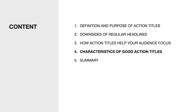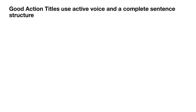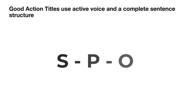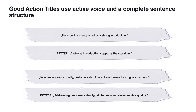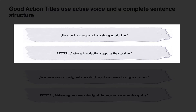For drafting good action titles there are two guidelines you need to follow. Good action titles use active voice and a complete sentence structure: subject, predicate, and object. The subject is the who or what of the sentence. The predicate is the verb, and the object is any noun or concept that is part of the action of the subject. As you can see, an action title written in active form is much more punchy and compelling than passive form.